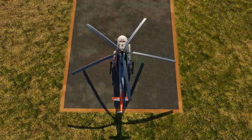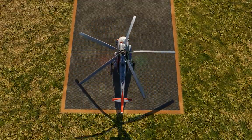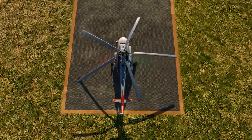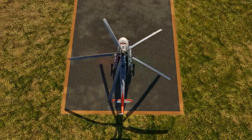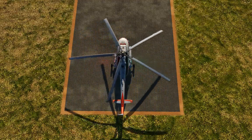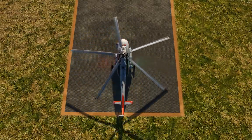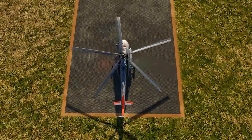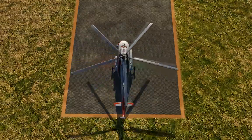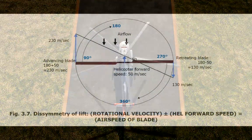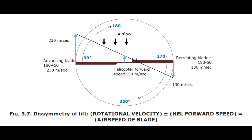So our first concept is dissymmetry of lift. If you look here, you can see the Hip's blades rotate in a clockwise direction. The blades on the left are moving in the same direction that you would be traveling in — that's called the advancing side. And the blades on the right are moving in the opposite direction — that's called the retreating side. The Hip's blades rotate at a constant speed, and if you were to measure that speed at the tip of the blade, it would be 180 meters per second at any point around the disc. If you're sitting on the ground, it's going to be 180 meters per second all around the disc — no problems.